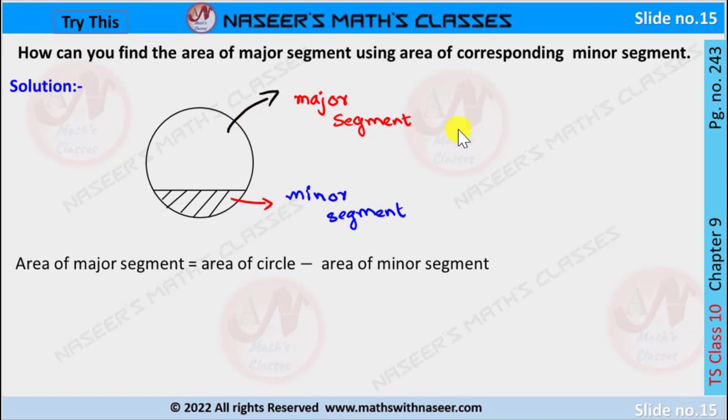So we find the area of the major segment is equal to area of the circle minus area of the minor segment.